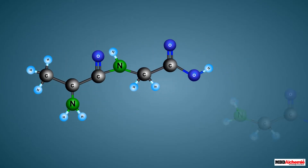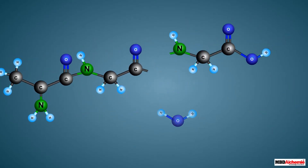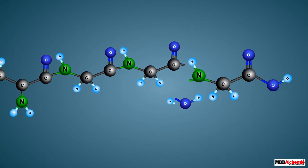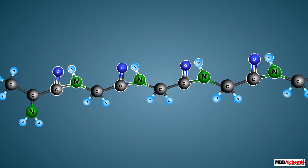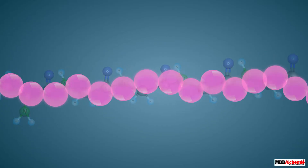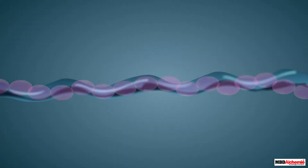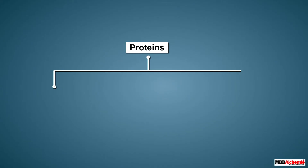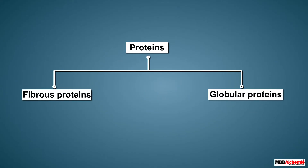Proteins are formed when a large number of amino acids bond together through peptide bonds. Depending upon the molecular shape of proteins, they can be classified as fibrous proteins and globular proteins. Let us study about them one by one.